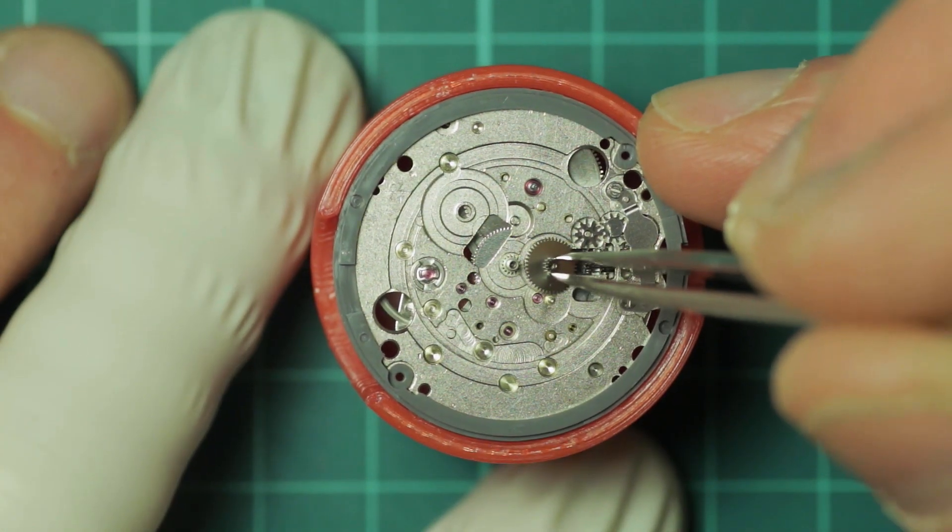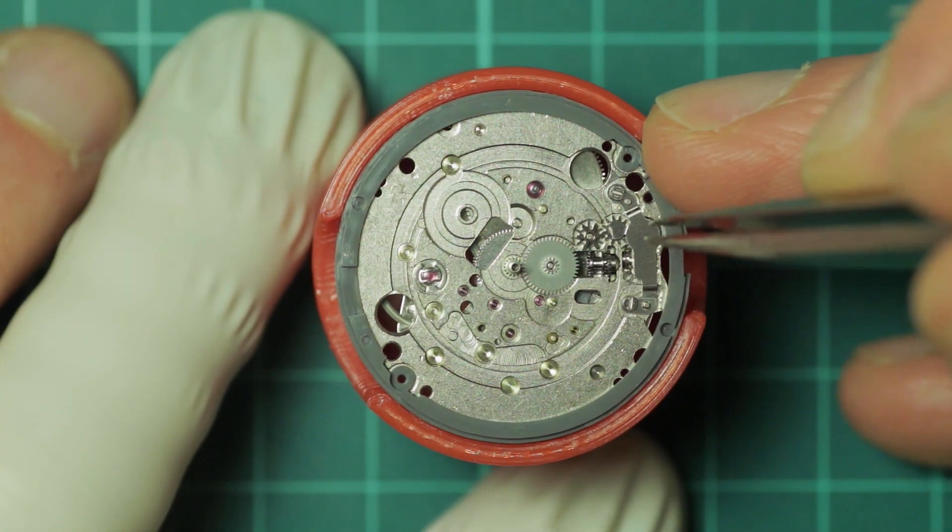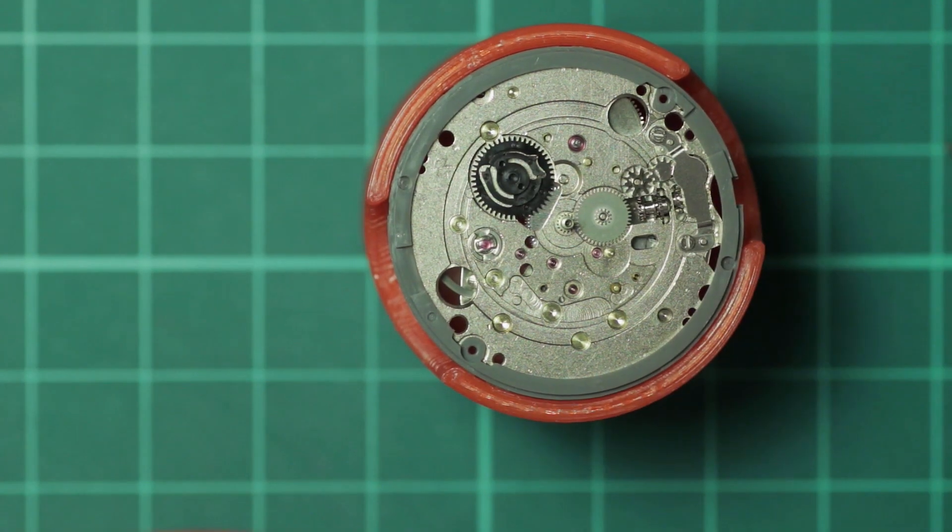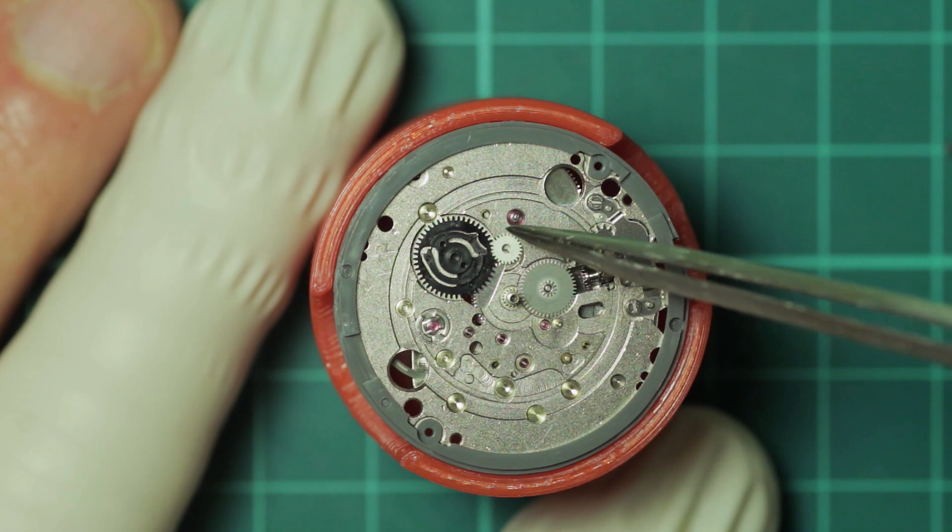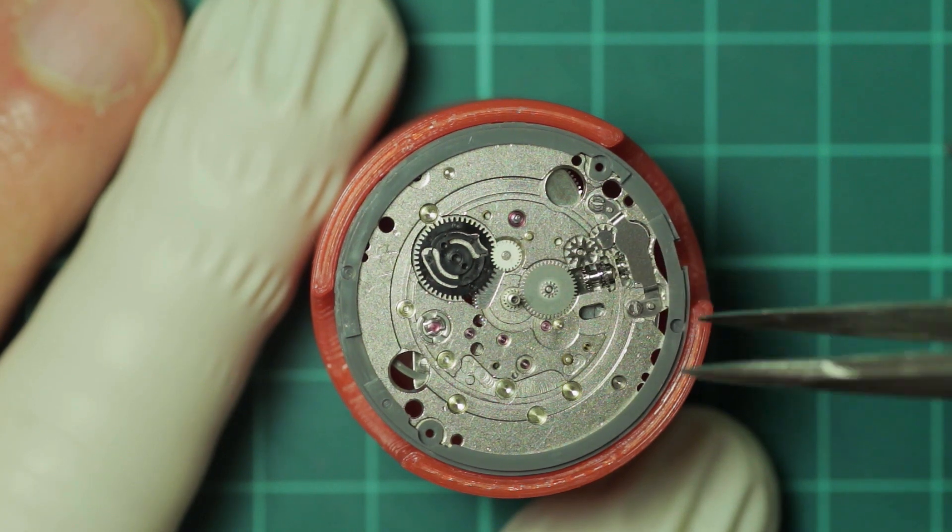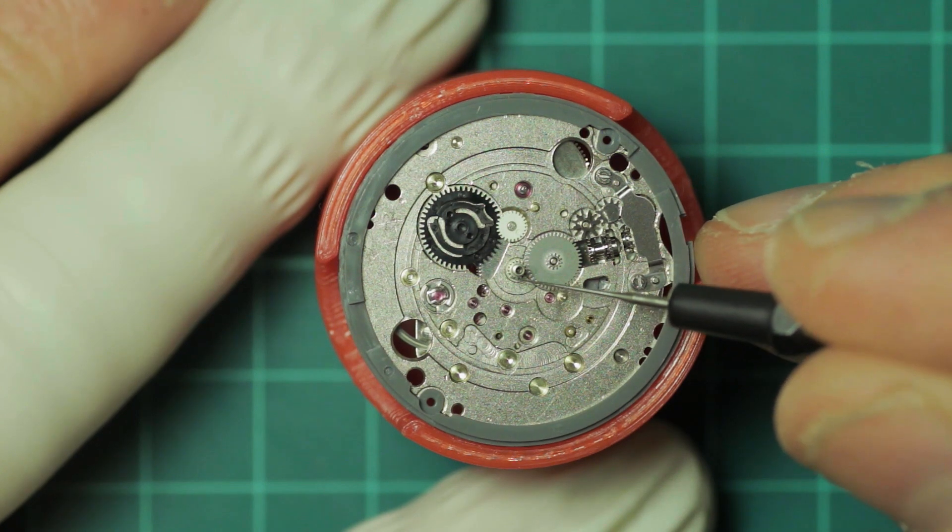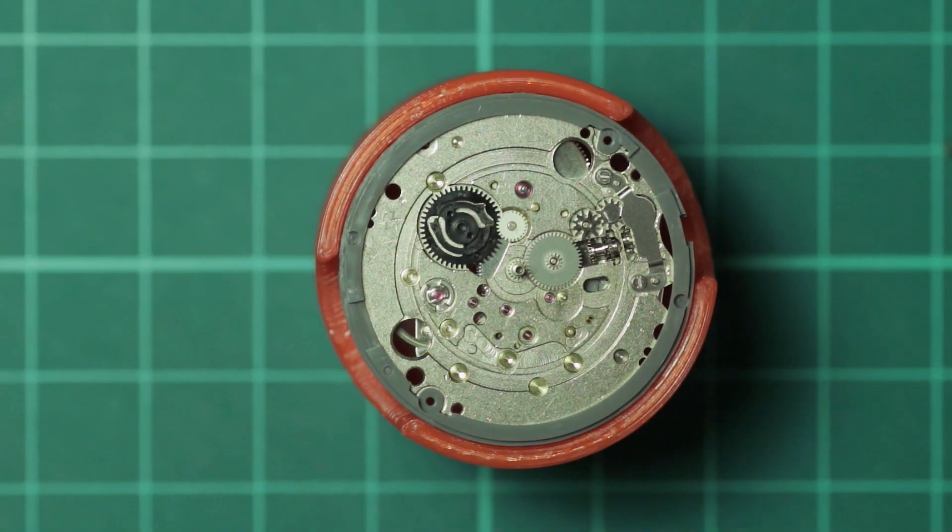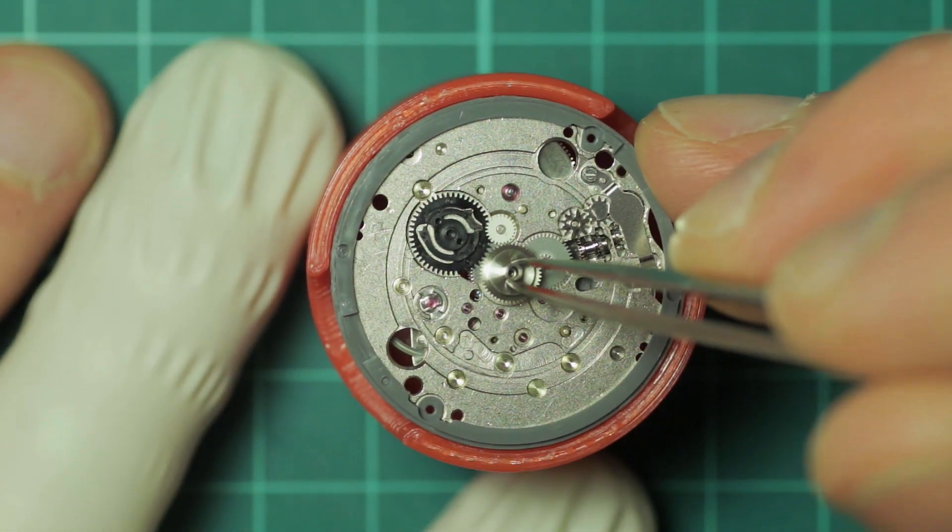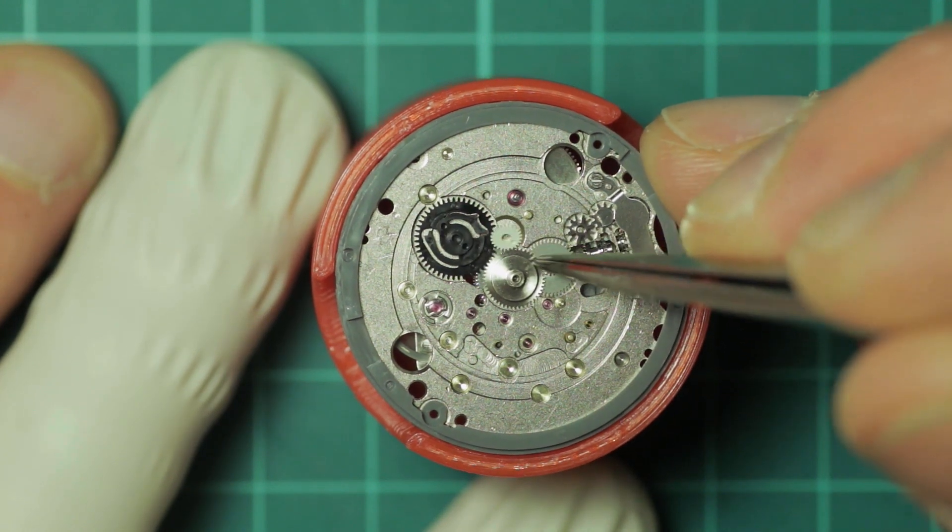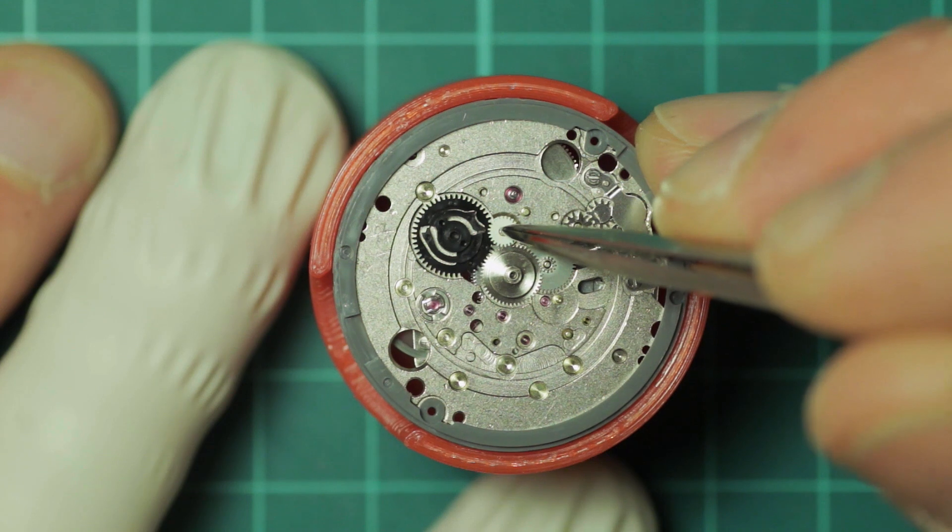And then the post for the minute wheel is oiled and the minute wheel fitted. The plastic date wheel is dropped into place, and the plastic intermediate date wheel which had popped off during the disassembly, so you didn't see that in the disassembly video, but that's also a plastic wheel. And then the cannon pinion is lubricated and the hour wheel drops into place on top of that.